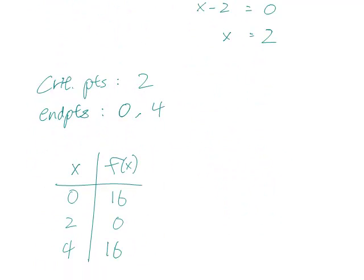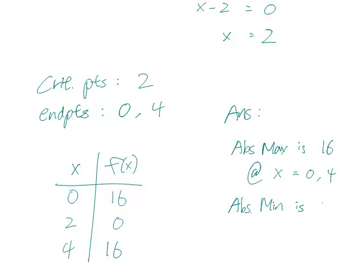So we have our answer. The highest f values are the absolute maximum. The absolute max is 16 at x=0 and x=4. The absolute min is 0, the smallest one in this table, and it occurs at x=2.